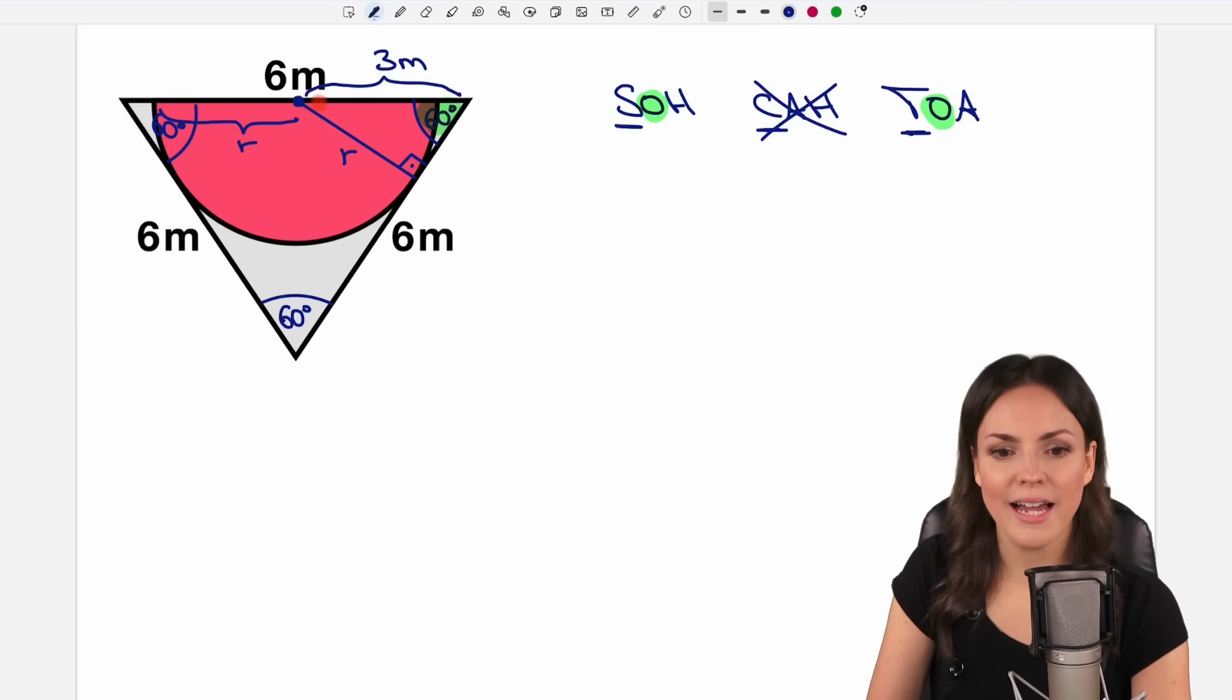And we have the side that lies across the right angle. So we have the hypotenuse. So H is what we have. So no tangent. We use the sine of our angle.